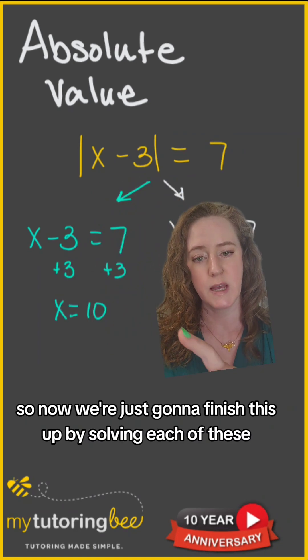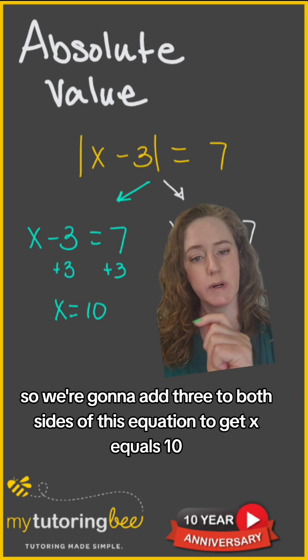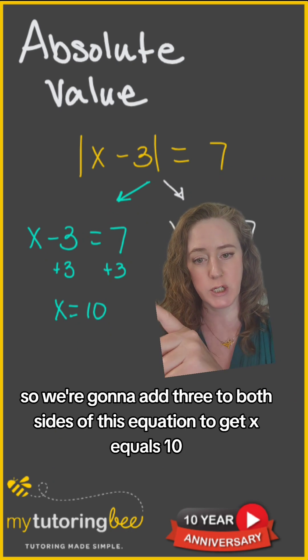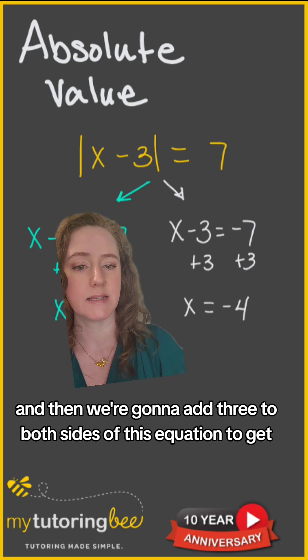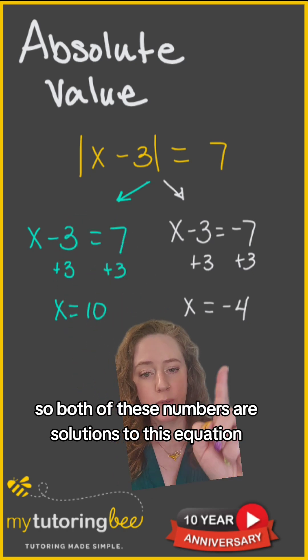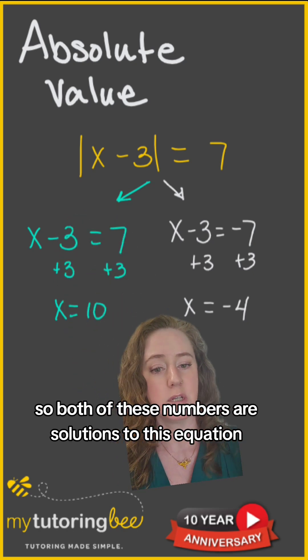So now we're just going to finish this up by solving each of these. We're going to add 3 to both sides of this equation to get x equals 10. And then we're going to add 3 to both sides of this equation to get x equals negative 4. So both of these numbers are solutions to this equation.